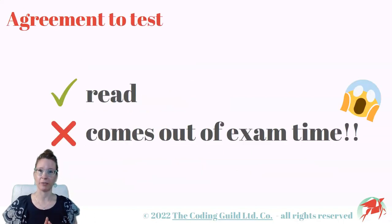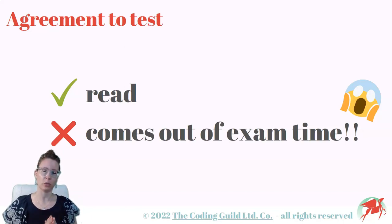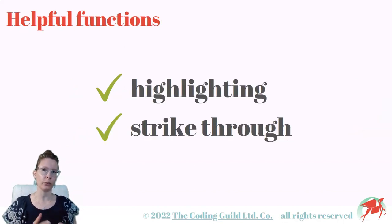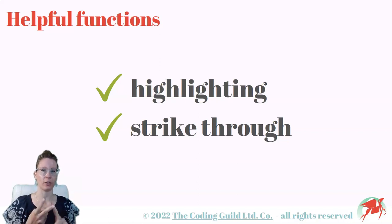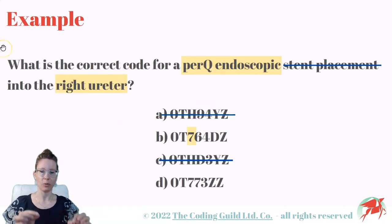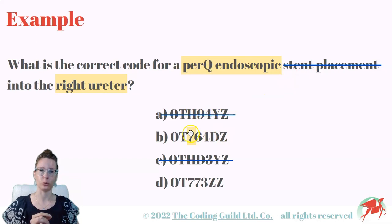At the beginning of the exam, you will be given an agreement to take the test. You are expected to read this, but do so quickly, because it already counts towards the 4-hour exam time you have. This agreement also serves as an introduction to the technical aspects of the CCS, where you will be shown how to use the highlighting and strike-through functions. Using them, you will be able to highlight parts of the questions, cross out answer options, or do both.